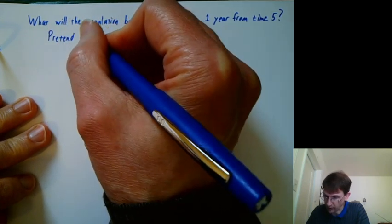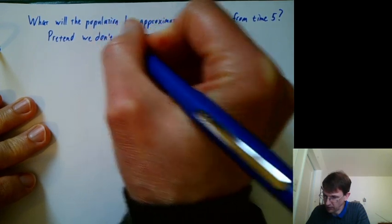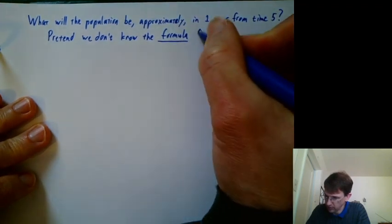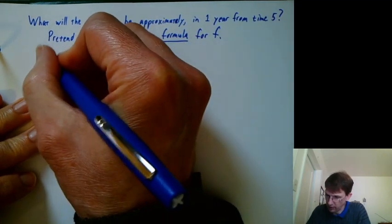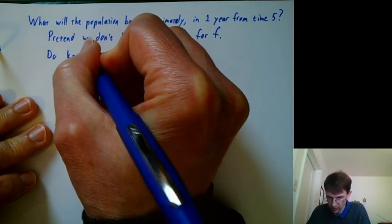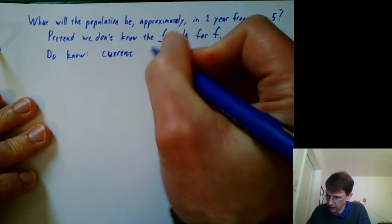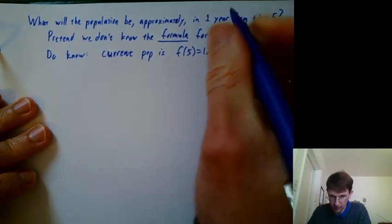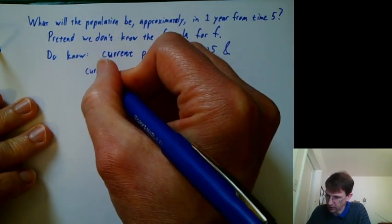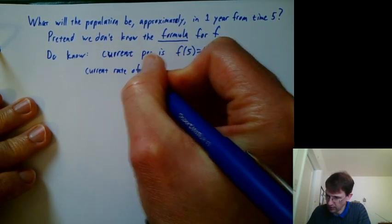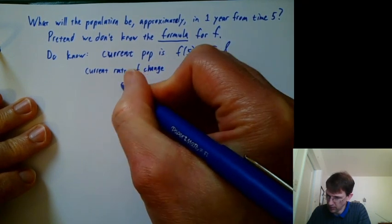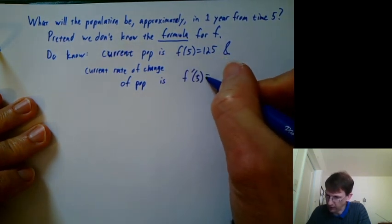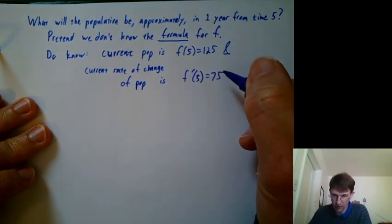What do we know? We'll say in a sec. So we pretend we don't know the formula for f. But we do know that the current population value is 125. And we know that the current rate of change of the population is, well, the name for that is f prime of 5, the derivative of f at 5. And we happen to know it's 75.